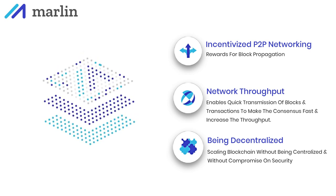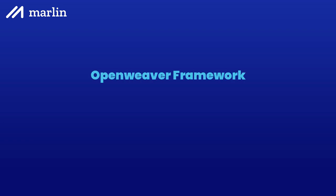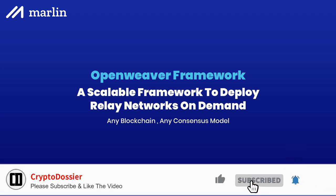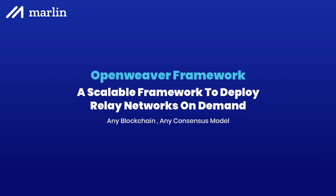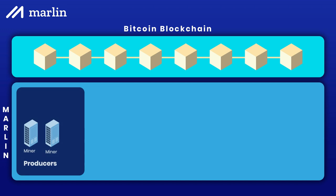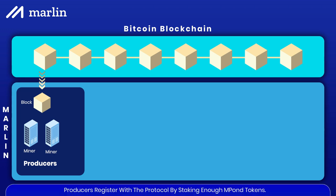Now we have a better understanding of Marlin and the problem areas it is focusing on. Marlin achieves this through their Openweaver framework, in which they deploy a relay network on demand. It is generic and can be integrated with multiple blockchains simultaneously, irrespective of their consensus model like proof-of-work or proof-of-stake. Taking an example of Bitcoin blockchain with Marlin network integrated: under Marlin network, the first participants are producers. Producer nodes are basically miners who receive blocks from the relevant blockchain — in this case Bitcoin — and introduce them into the Marlin relay network. To become a producer, they have to register with the protocol by staking enough MPond tokens.